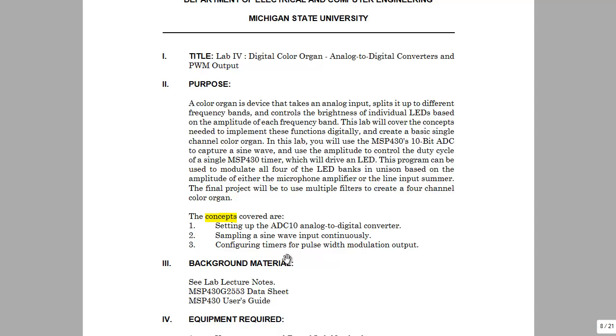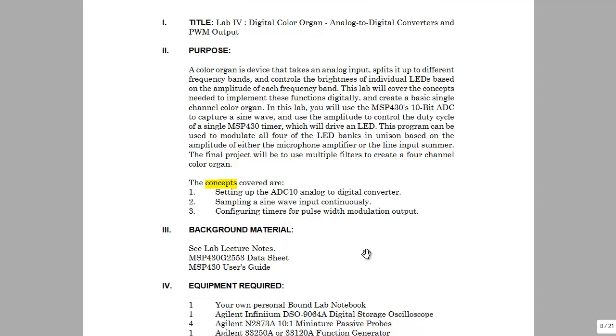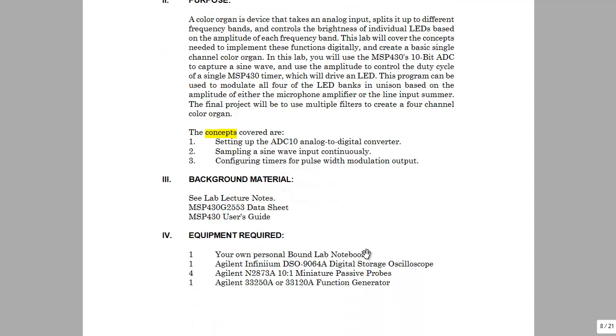For the timer, we'll start out with just setting a basic pulse width modulated output that you can control by inputting a number. And then you'll actually connect the two and use the analog to digital converter input to determine the pulse width modulated output duty cycle. So this is basically what a color organ does. And that's lab four of ECE 480. Thanks for watching.